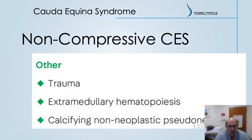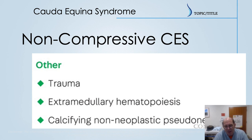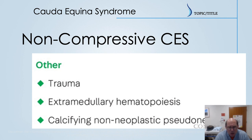The other or idiopathic group includes conditions like extramedullary hematopoiesis — where the body is making blood cells in the wrong place. Importantly, there is also the idiopathic group where we haven't exactly identified a cause. It's probably an undefined viral cause, but some patients develop cauda equina syndrome despite everything being negative — scan may be negative but they still have cauda equina.